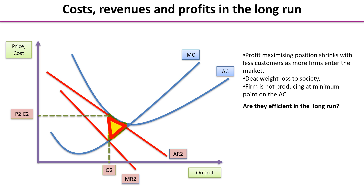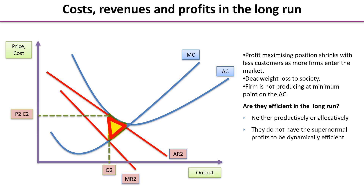Is this firm in monopolistic competition being efficient in the long run? We can see it's not productively efficient because it's not producing at the lowest point on the average cost curve where AC equals MC. It's also not allocatively efficient because it's not producing where marginal cost equals average revenue. And since there are no supernormal profits, according to this theory the firm is not dynamically efficient either — it doesn't have the supernormal profit to fund innovation.